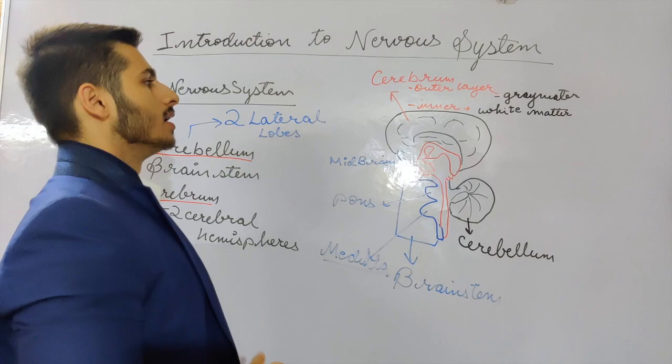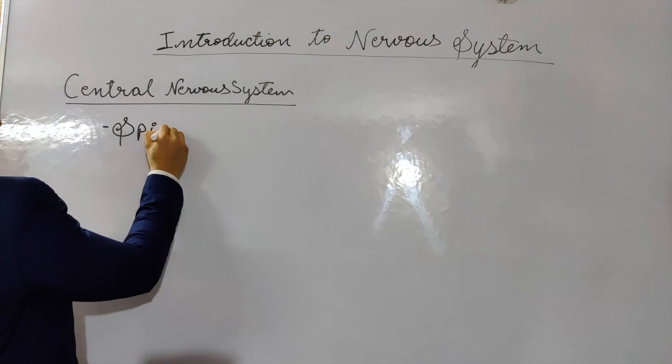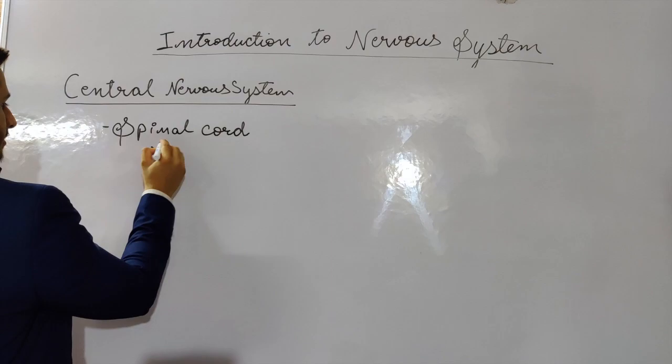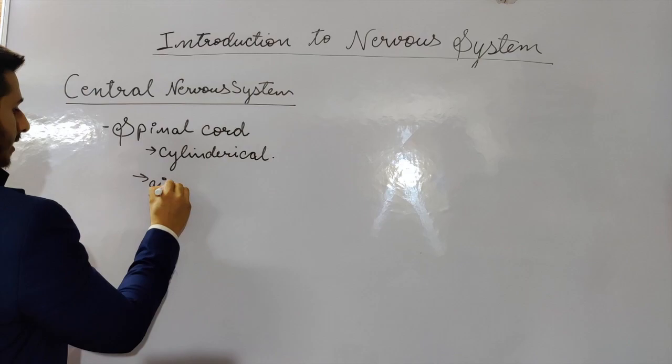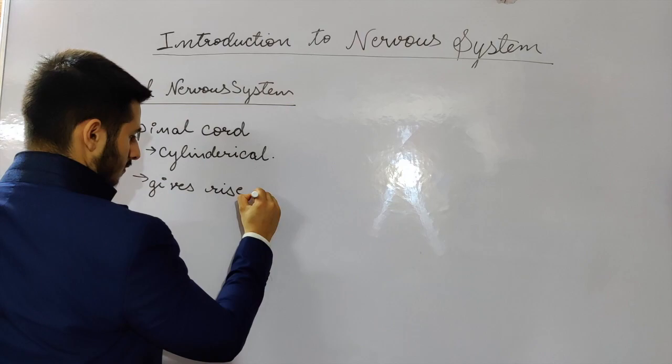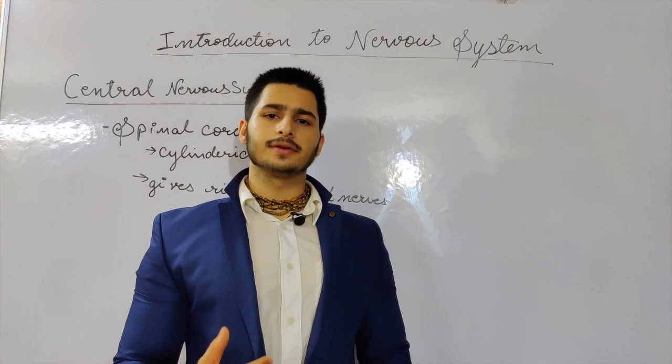This is a general structure of the brain — we will discuss the details of each part in later videos. The second structure of the CNS is the spinal cord. The spinal cord is cylindrical in shape and gives rise to spinal nerves in the body.